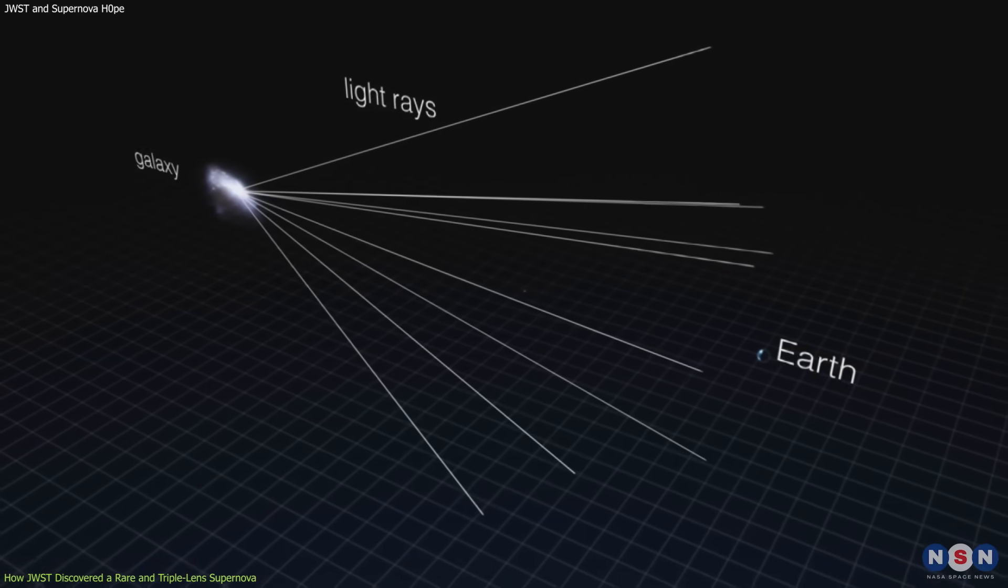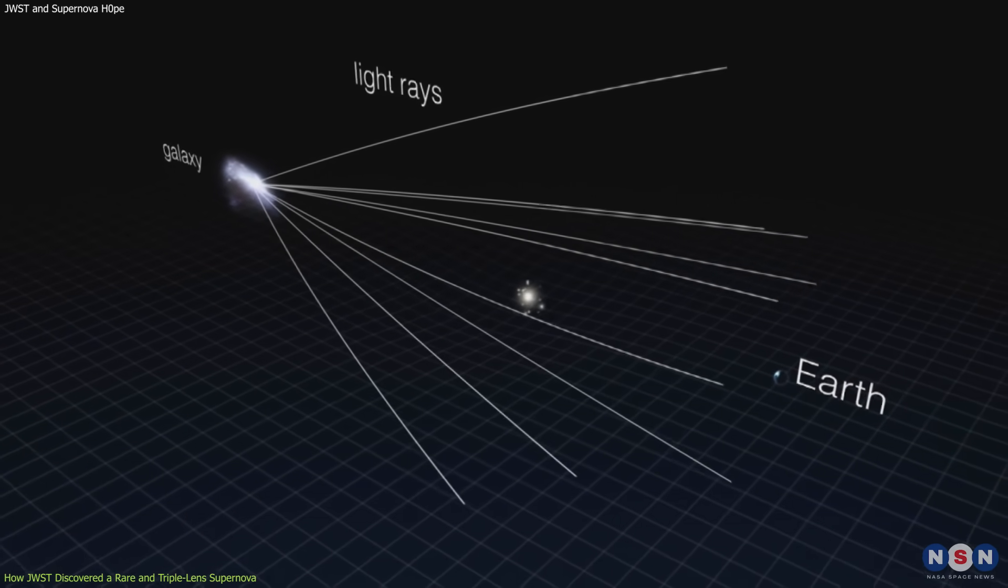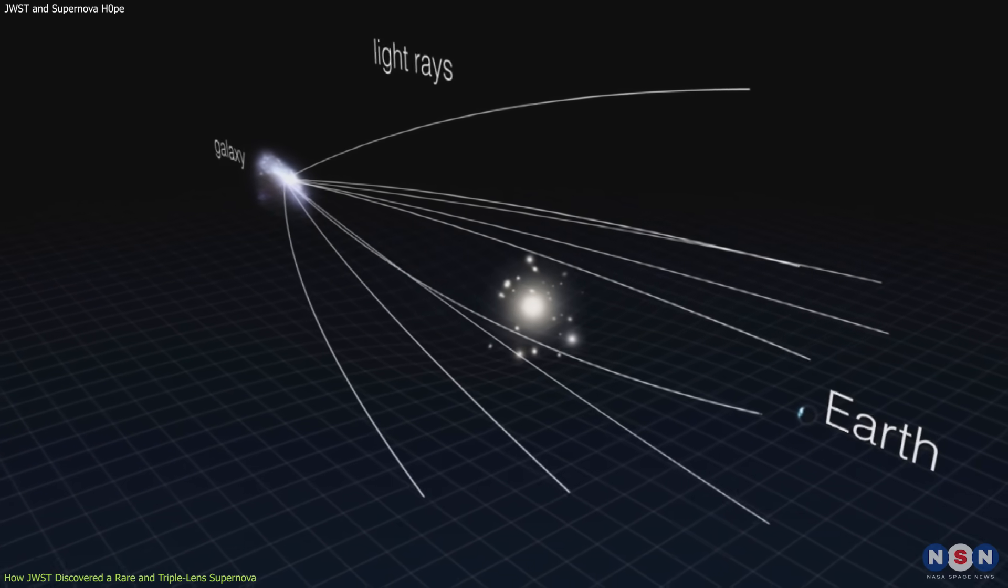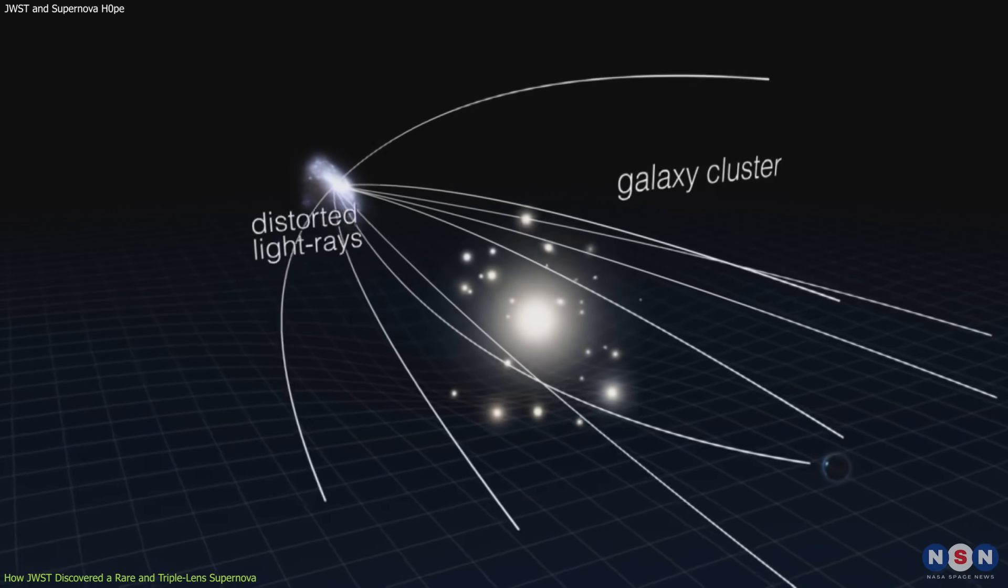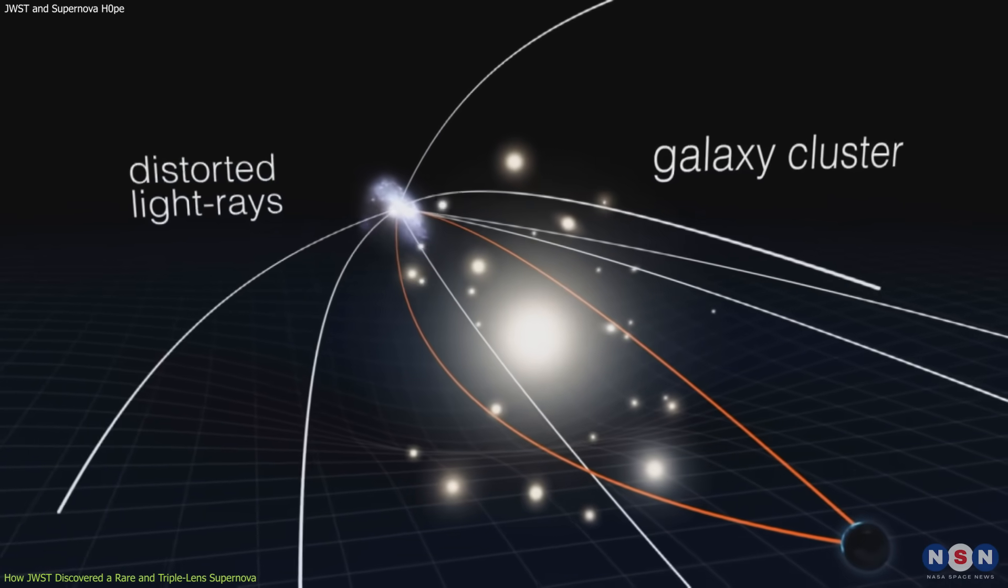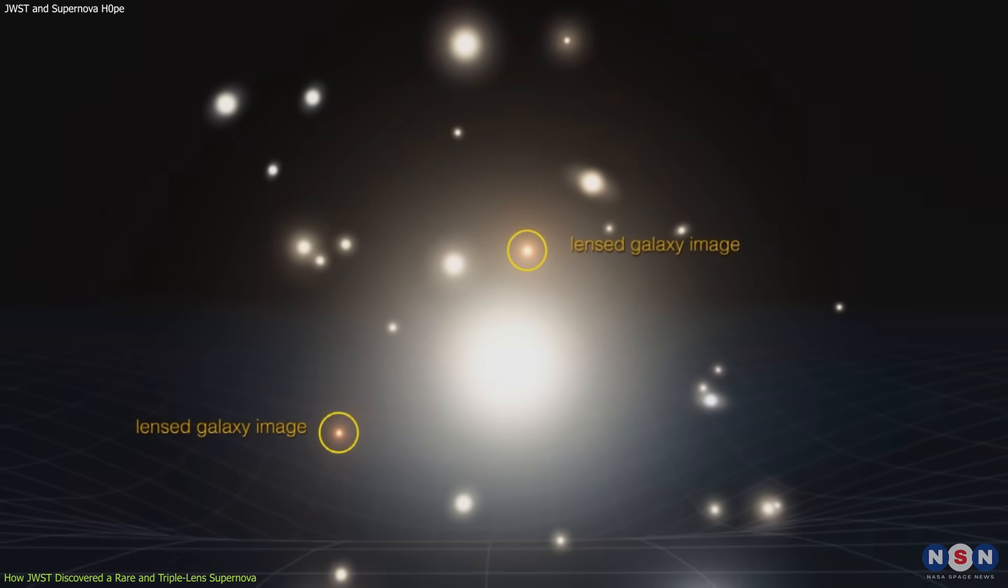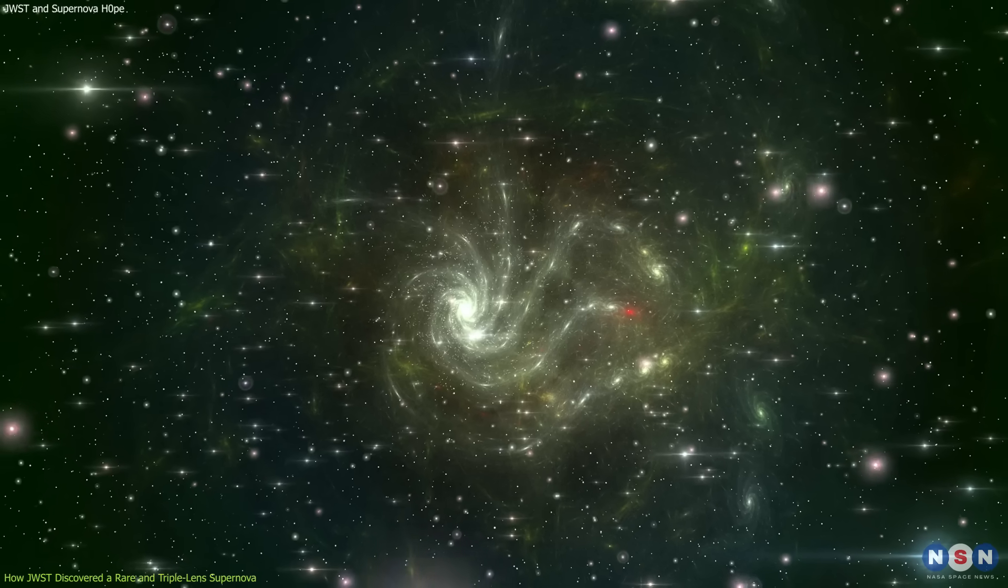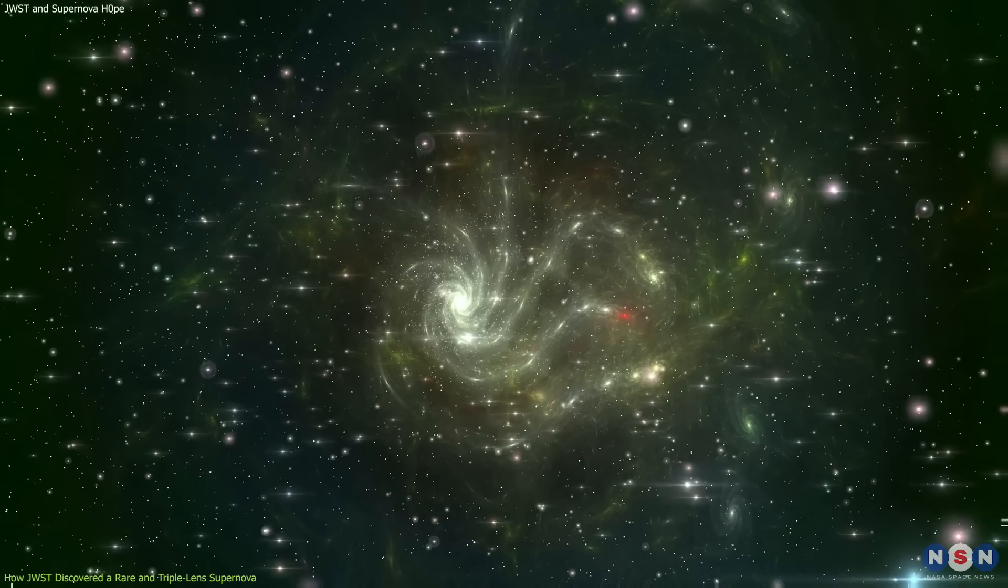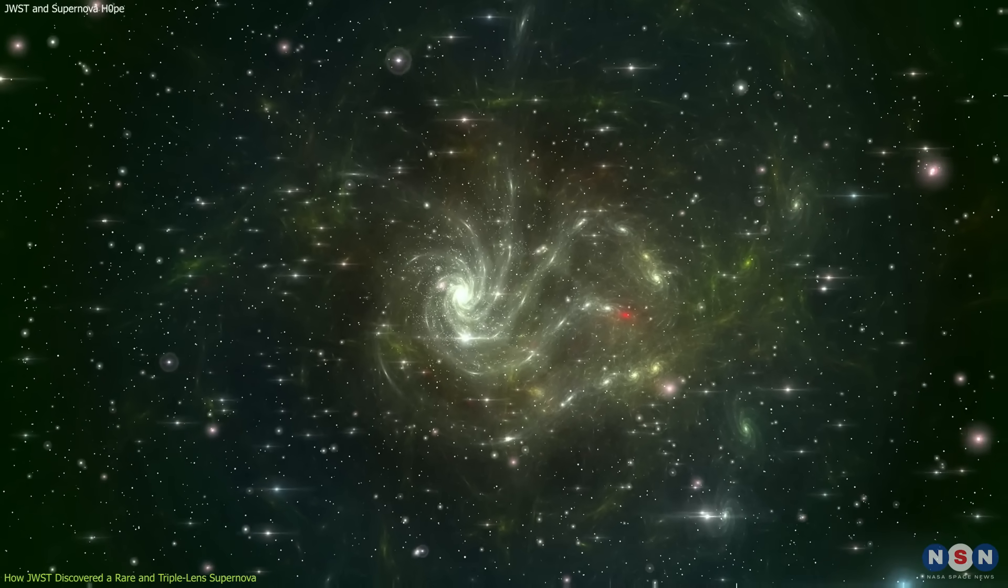The reason why the supernova appeared in three different images was because of a cosmic phenomenon called gravitational lensing. It is an effect that occurs when a massive object bends the spacetime around it and acts like a lens that magnifies or distorts the light coming from behind it. This massive object can be anything from a star to a galaxy to a cluster of galaxies.